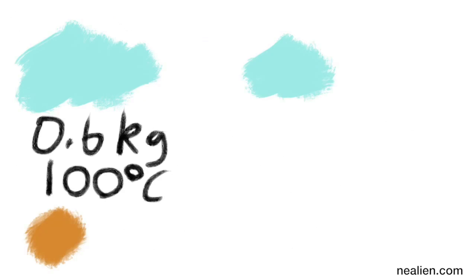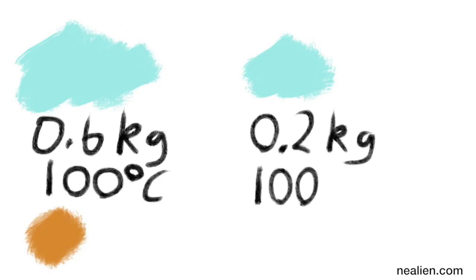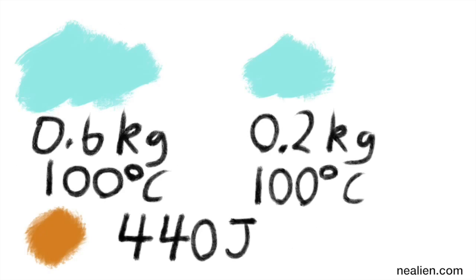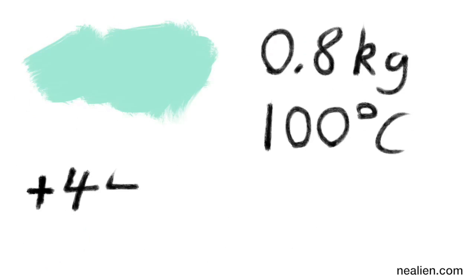Even though it took that much energy, we still have a little bit of energy left. We have turned the 0.6 kilograms of ice into water that is now 100 degrees Celsius, and the 0.2 kilograms that was steam is now liquid water at 100 degrees Celsius. We still have 440 joules left, though, which isn't really a lot of energy compared to the amounts we've seen in this problem so far.